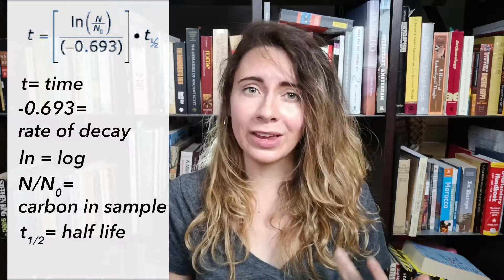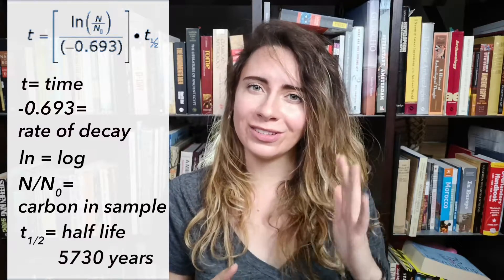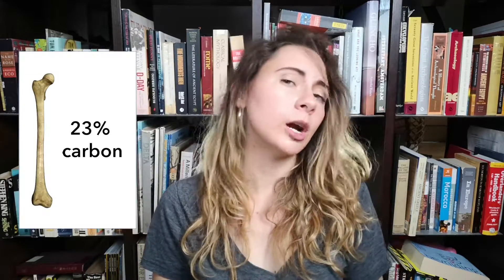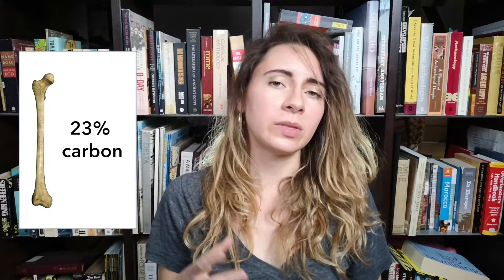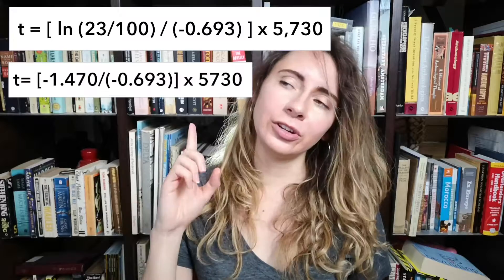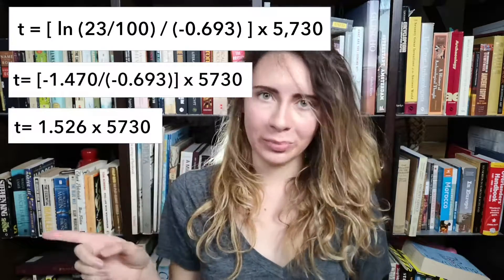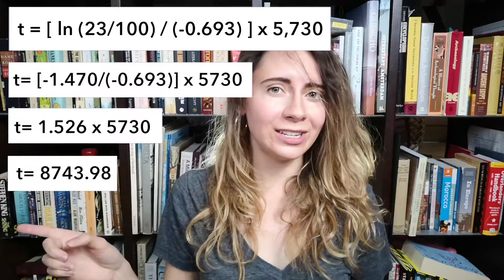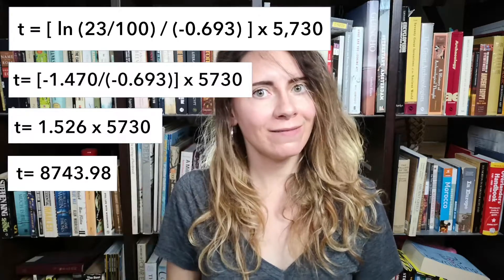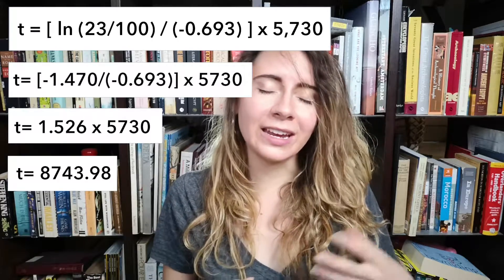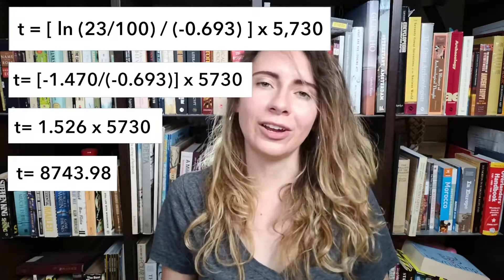As we know from the previous video, the half-life is 5,730 years. So for example, say we find a bone that had 23% carbon-14 compared to something living today. The equation might look like this. First, you do the log thing, then you do the bracket stuff, then plug all of that into your calculator, and you get that. So the sample is then 8,744 years old. Congratulations, you did it! Excellent work.